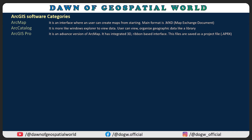ArcGIS Pro is an advanced version of ArcMap. It has an integrated 3D ribbon-based interface. Files are saved as a project file such as .aprx. ArcScene, accessed via the 3D Analyst extension, converts 2D images into 3D form. Its file format is .sxd.